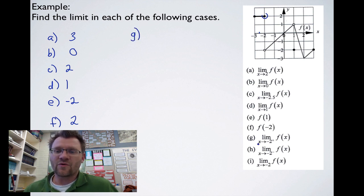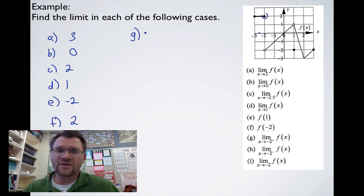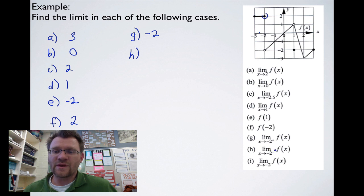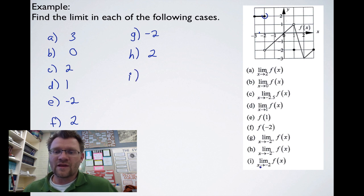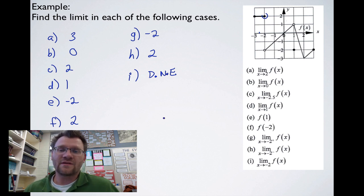For part (g), we're approaching negative 2 from the positive side — that means from the right-hand side — and we're approaching a height of negative 2. For part (h), if we're approaching negative 2 from the negative side or left-hand side, we're approaching a height of 2. That means for part (i), the limit as x approaches negative 2 does not exist. We write DNE because the two heights are totally different: one side approaches negative 2 and the other approaches positive 2.